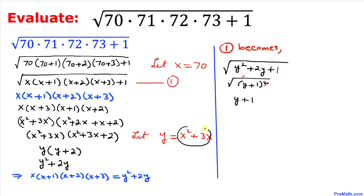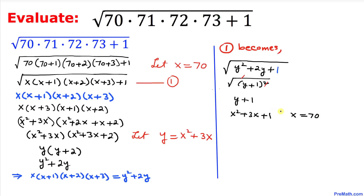But we know y was equal to x²+3x, so replacing that, our result becomes x²+3x+1. And since x equals 70, let's replace x by 70: we get 70²+3×70+1.